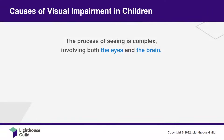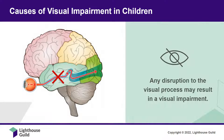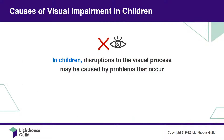The process of seeing is complex and involves both the eyes and the brain. Any disruption to this process can result in a visual impairment. This is true for both adults and children. However, the causes and impact of visual impairment vary in children. In children, disruptions to the visual process may be caused by problems that occur before, during, or after birth.